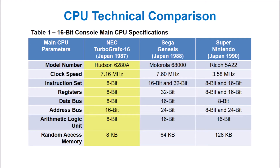It can be considered a hybrid 8 and 16-bit system, as it includes two 16-bit video coprocessors. This is understandable, as the TurboGrafx-16 was the first to launch in 1987.